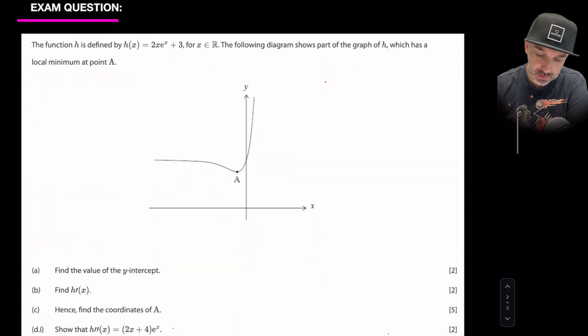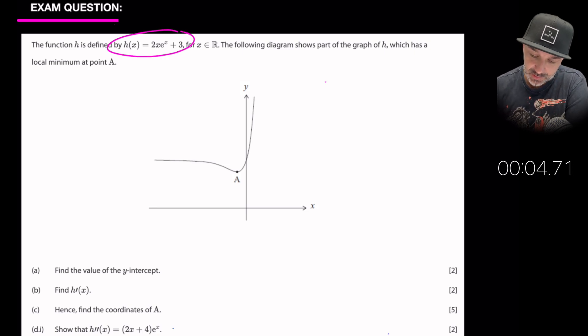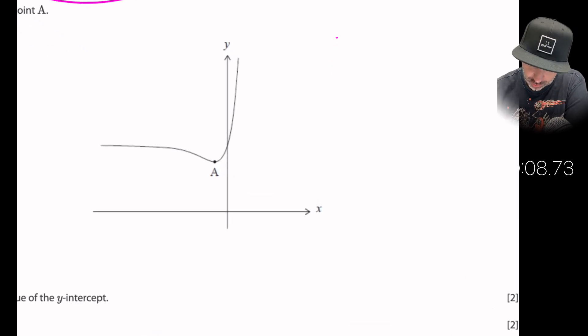Okay, start the clock. The function h is defined by the following. The following diagram shows part of the graph h which has a local minimum at point A. Right, so they've gone ahead and told us that the local minimum occurs here at A.